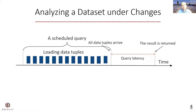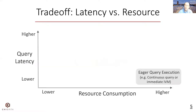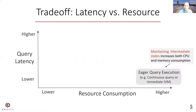Prior projects in continuous query sensing or stream computing are mainly optimized to eagerly lower the query latency. However, eager query execution also means consuming resources eagerly. For example, many continuous query systems will keep all intermediate states in memory, like the hash table for hash join, or maintain those intermediate states for every new tuple. This greatly increases both CPU and memory consumption, but resources are not free, especially in today's pay-per-use model.